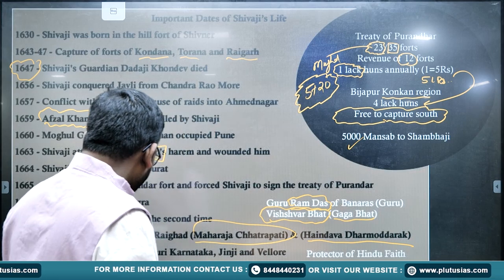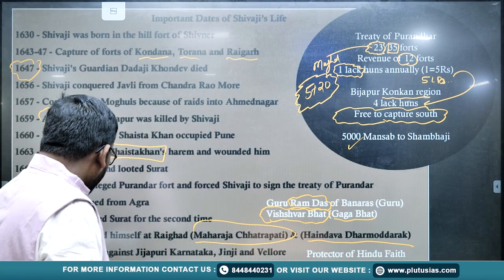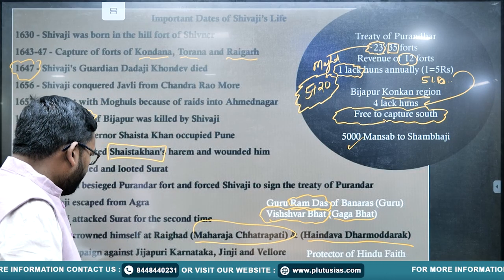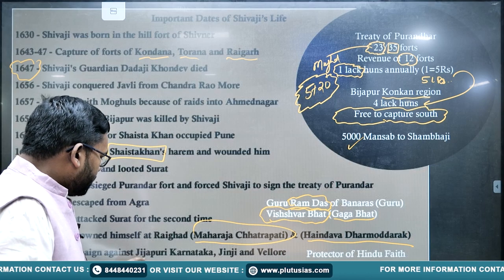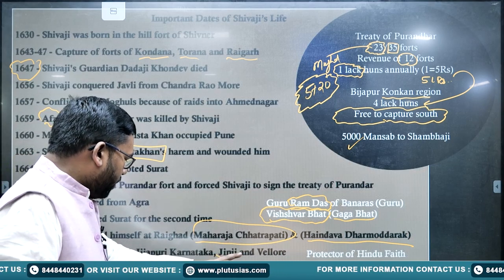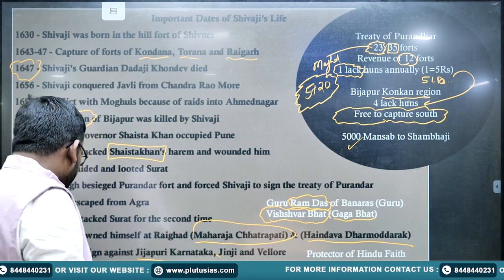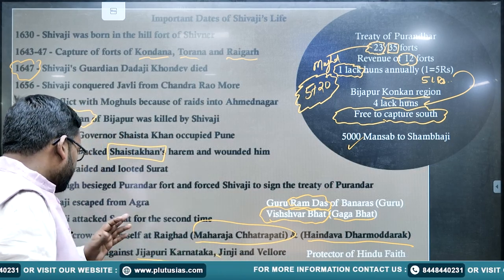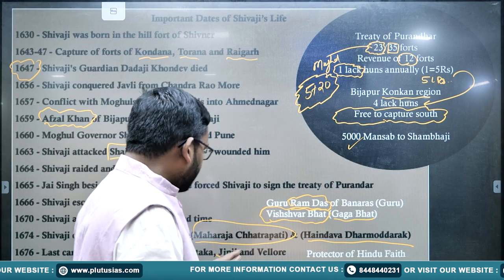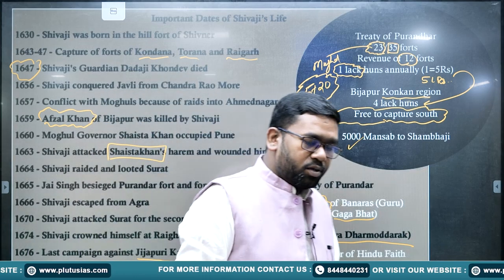In 1676, Shivaji led his last campaigns against Bijapur, Karnataka, Jinji, and Vellore. But in 1680, Shivaji died of a bloody flux (diarrhea).